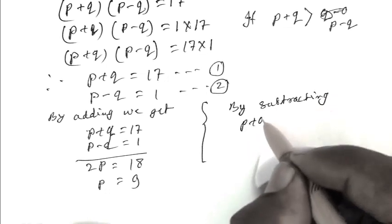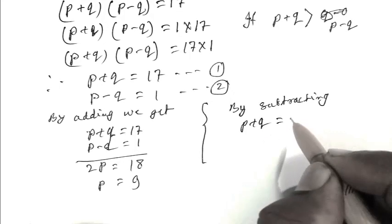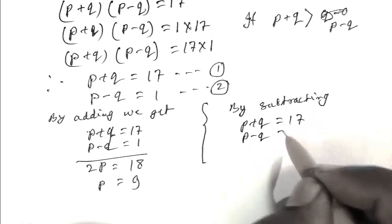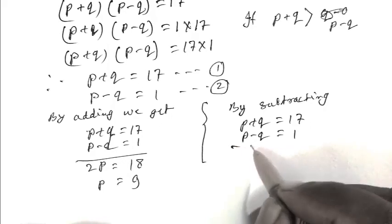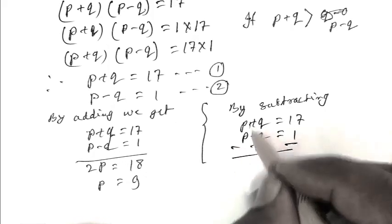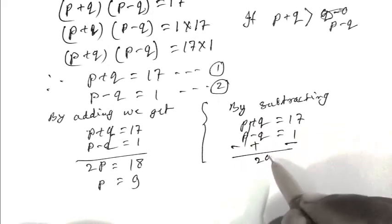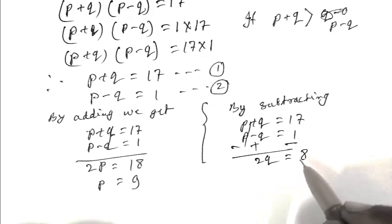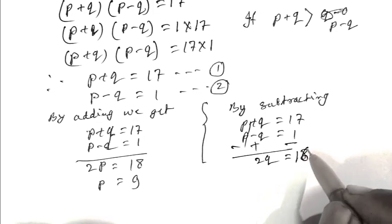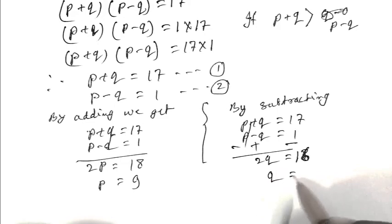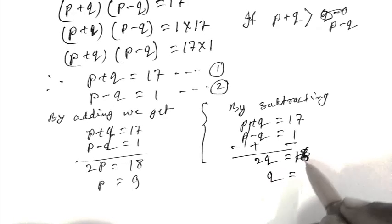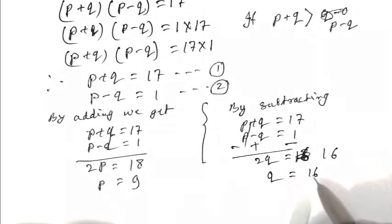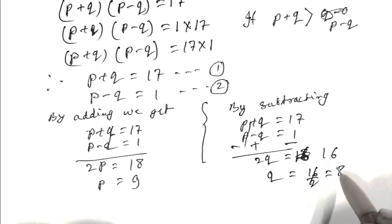By subtracting, we get 2q equal to 16, so q equals 16 upon 2, that is q equals 8.